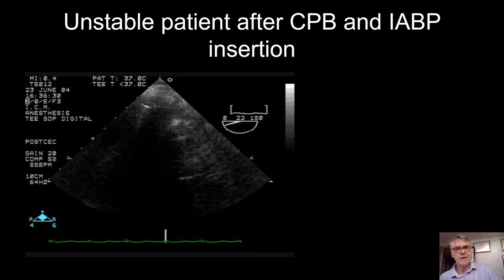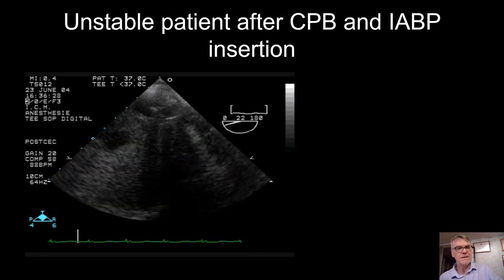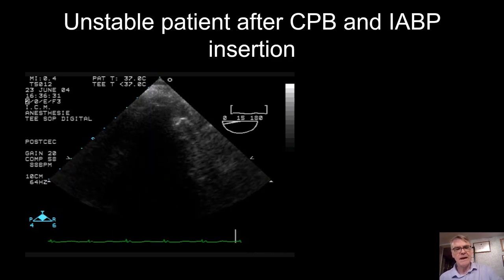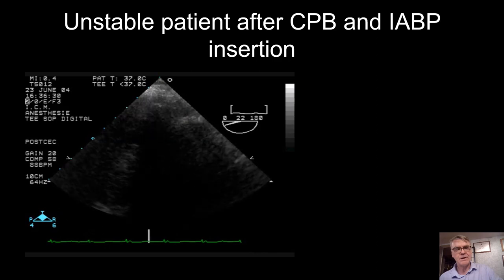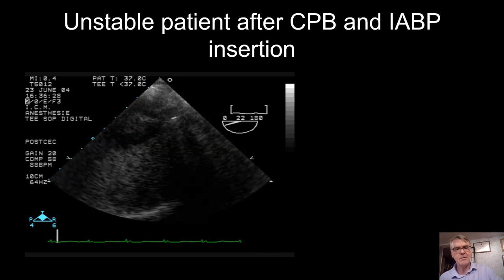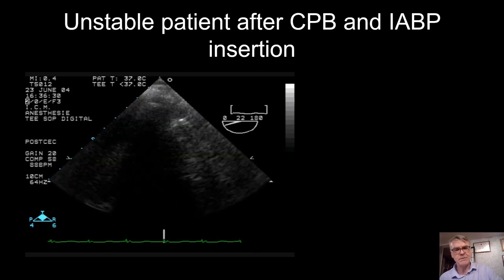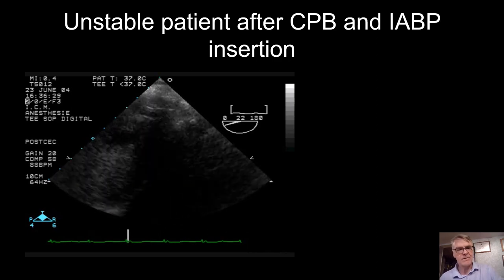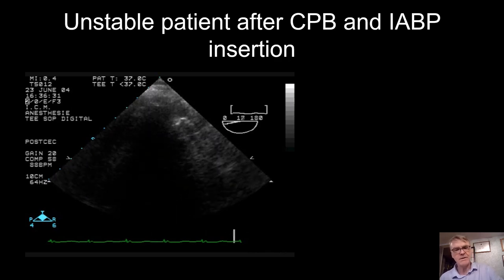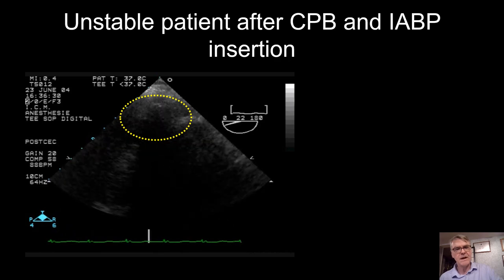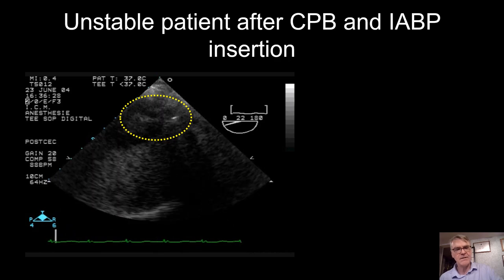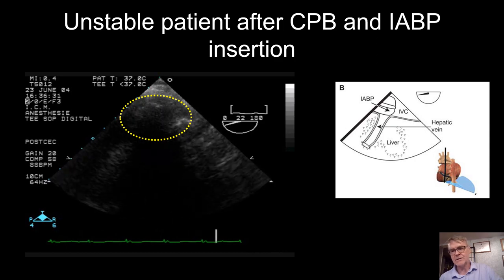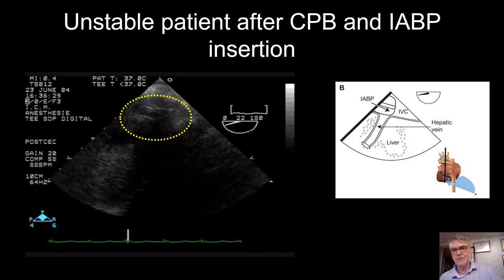Another example: a very unstable patient from 2004, difficult to wean from bypass. An intra-aortic balloon pump was inserted. At that time, people were not using ultrasound much for vascular access. On the TEE view, you can see something inflating and deflating in the inferior vena cava — and that was in fact the intra-aortic balloon pump, misplaced in the inferior vena cava instead of the aorta.